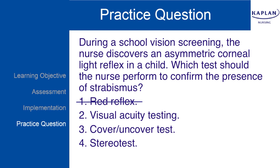Visual acuity testing: your client may have alterations in their visual acuity resulting from untreated strabismus, but testing their visual acuity is not a specific indicator for the presence of strabismus. The cover-uncover test would confirm the presence of this condition — movement of the observed eye while the other eye is covered will let you know strabismus is indeed present. Stereo testing determines the presence or absence of binocular depth perception; this is not a specific test for strabismus.